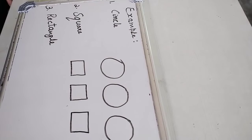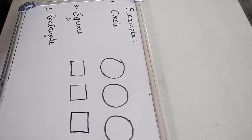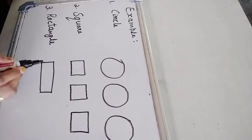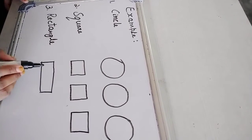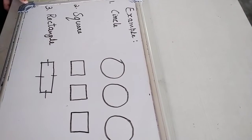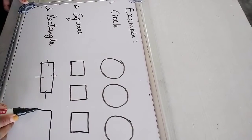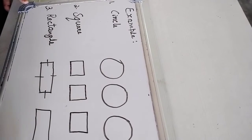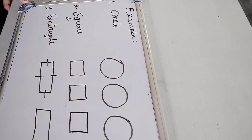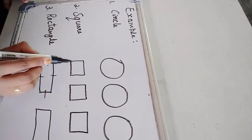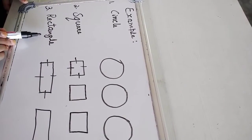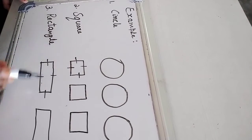Next one. Third one is rectangle. Here in this, opposite sides are equal. Opposite sides are equal. Which is this shape, students? Rectangle. Is it clear? Circle — here all four sides are equal. Third one is rectangle — in this, opposite sides are equal.